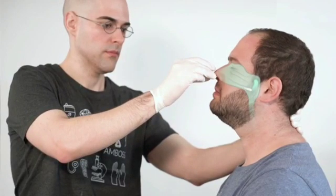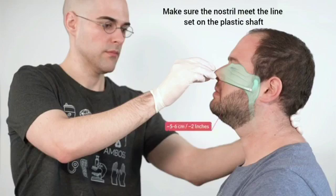Do not advance the swab upwards, but instead straight back until resistance is felt as the swab reaches the posterior nasopharynx. When collecting samples from an adult patient, this corresponds to a travel distance of approximately 5 to 6 centimeters or 2 inches.